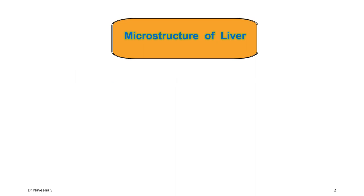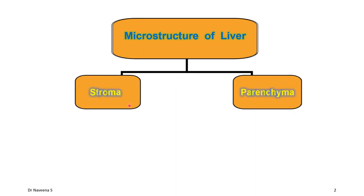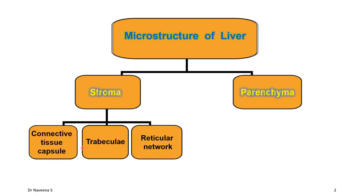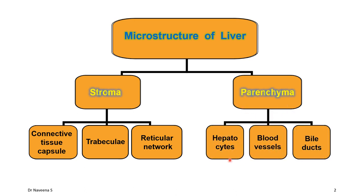Welcome to this video tutorial on histology of liver. Liver is composed of stroma and parenchyma. Stroma is connective tissue which forms the capsule, trabeculae, and reticular network. Parenchyma consists of hepatocytes, blood vessels, and bile ducts which form the intrahepatic part of the biliary apparatus. Basically, the microstructure of liver is all about stroma and parenchyma.